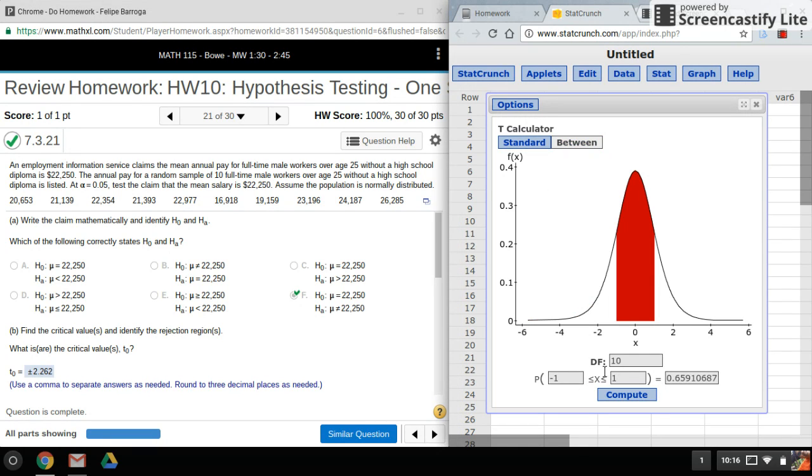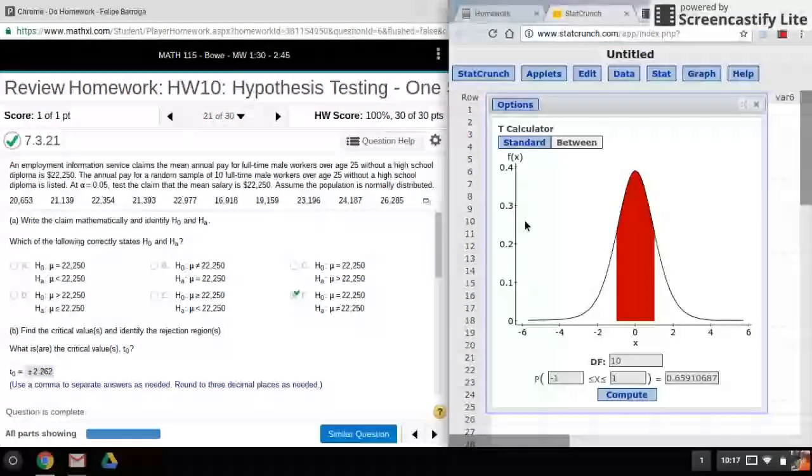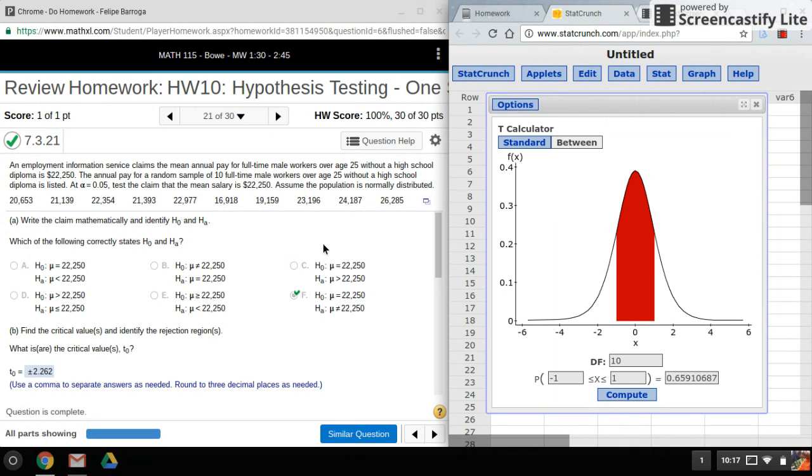The only difference is we have the degrees of freedom. So again because you can't find the area outside you'll have to do between. So we'll do our degrees of freedom again, here I got a random sample of 10.